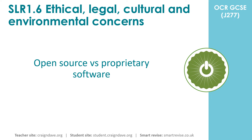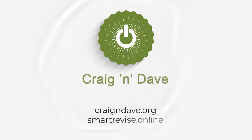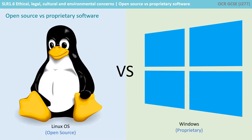In this video, we take a look at the differences between open source and proprietary software. One of the most well-known examples of open source versus proprietary software is the battle between Linux and Windows. Linux is an open source operating system, and Windows is a proprietary operating system.